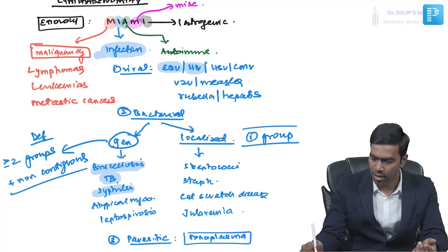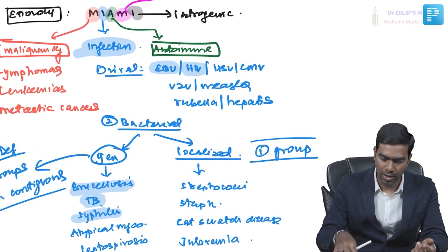There is another important term — persistent lymphadenopathy. Persistent means if the lymphadenopathy exceeds three months, we call it persistent. Persistent generalized lymphadenopathy, or PGL, means two or more non-contiguous lymph node groups are involved for more than three months.